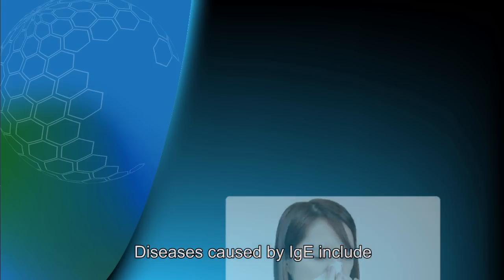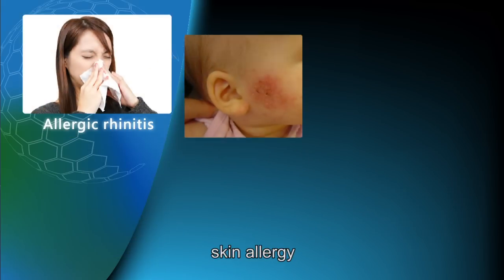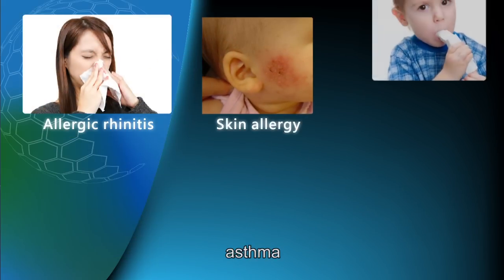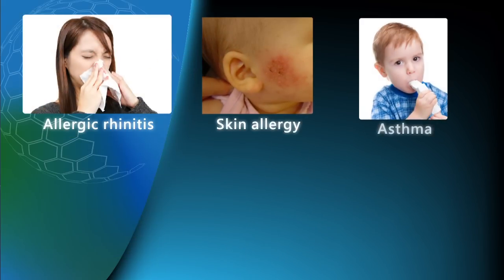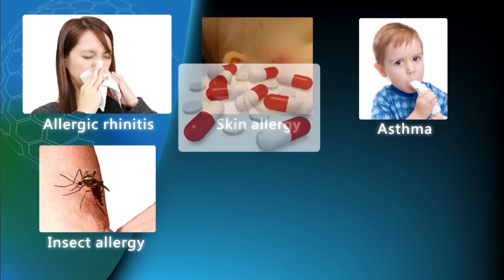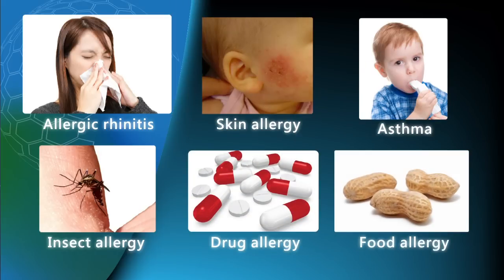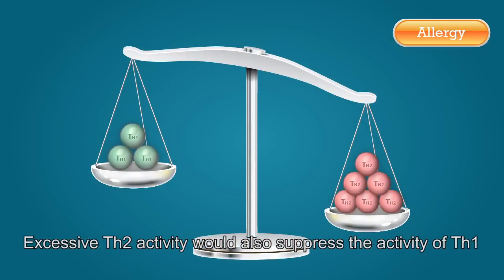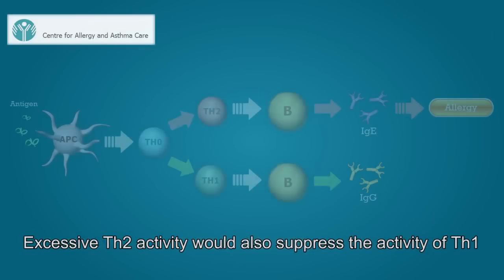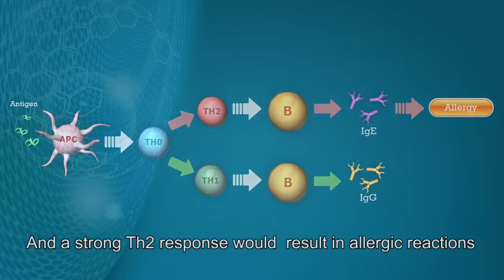Diseases caused by IgE include allergic rhinitis, skin allergy, asthma, insect allergy, some drug allergies, and some food allergies. Excessive Th2 activity would also suppress the activity of Th1, and a strong Th2 response would result in allergic reactions.